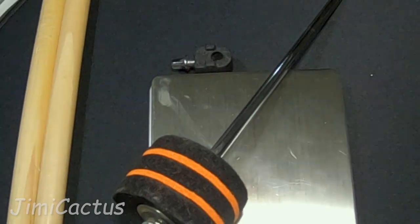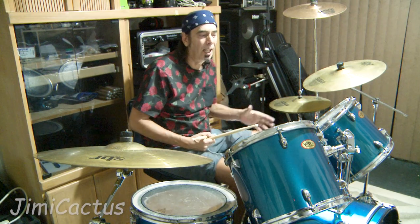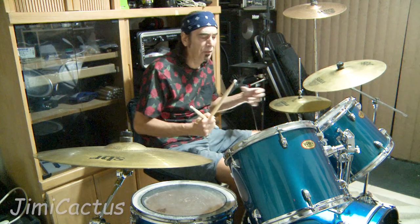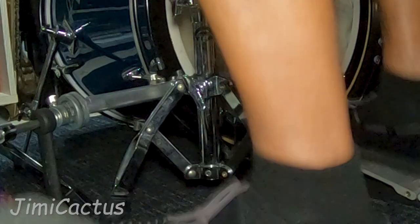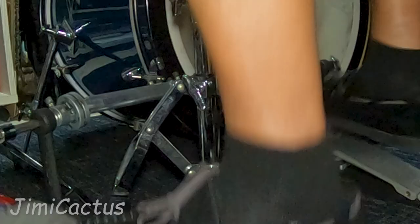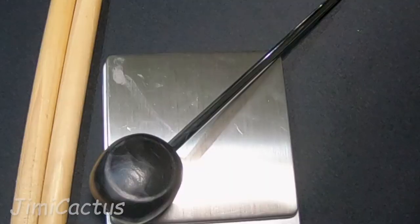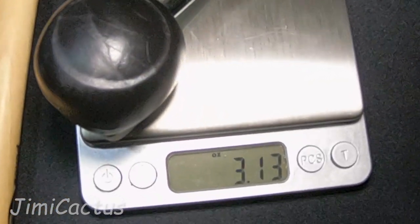The Tomato beater is a standard size round beater and it has kind of a really bouncy feel to it. So we're going to switch over to the Gibraltar type. The two-sided DW beater is almost an ounce heavier than the round type of felt Tomato beater.